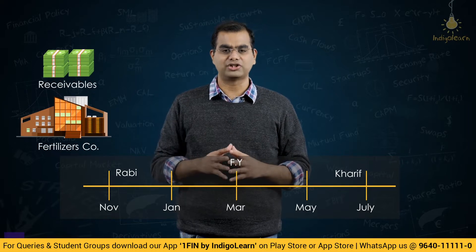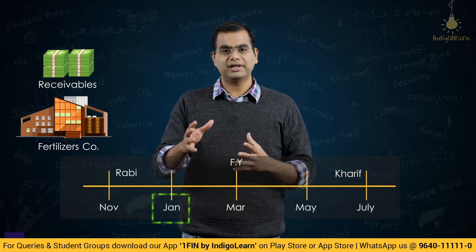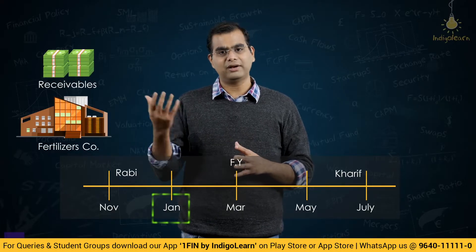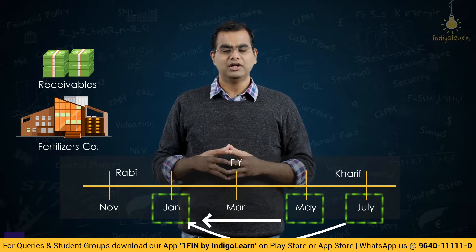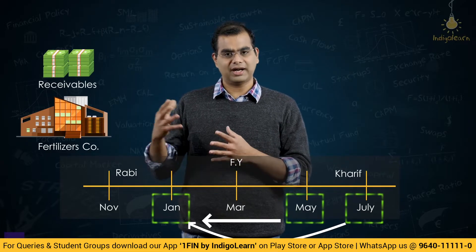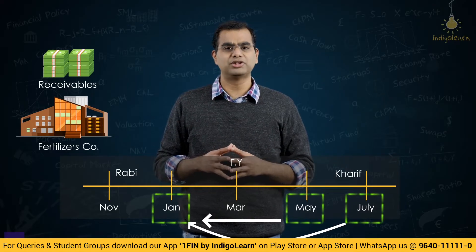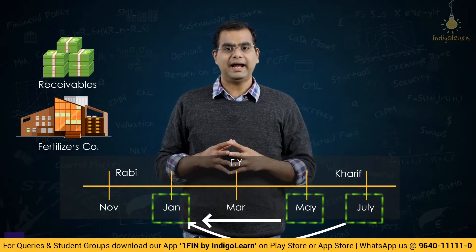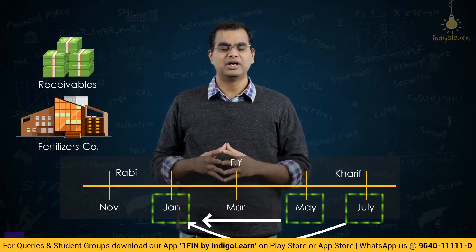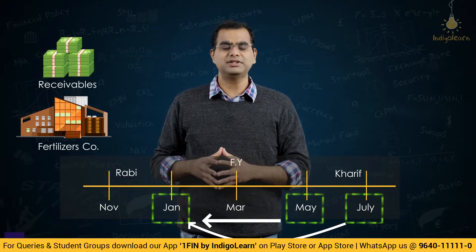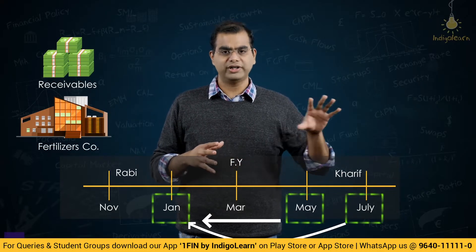The financial year ending is in March. So whatever Rabi sales used to happen in January, typically the money would come back only in May or June. So for our company and for a lot of other fertilizer companies, they used to have a good amount of receivables towards year end, running to thousands of crores, and in order to finance those receivables, companies used to take borrowings from banks.